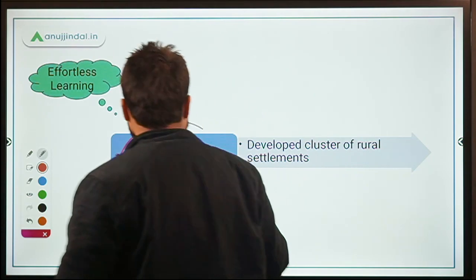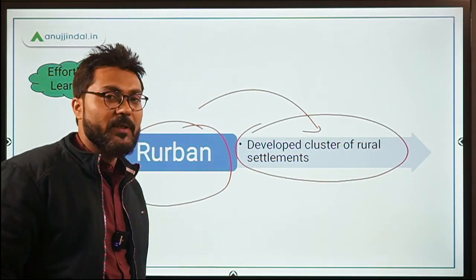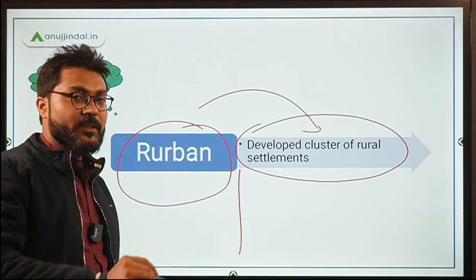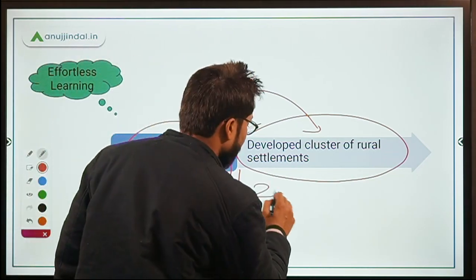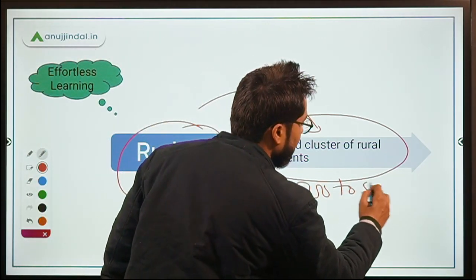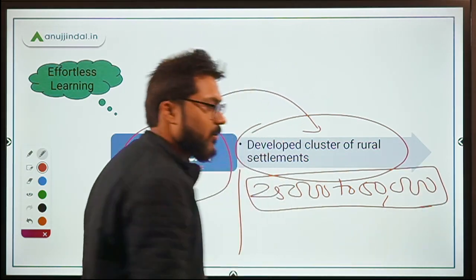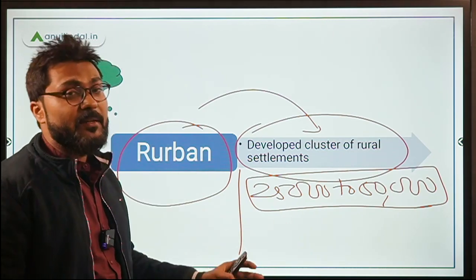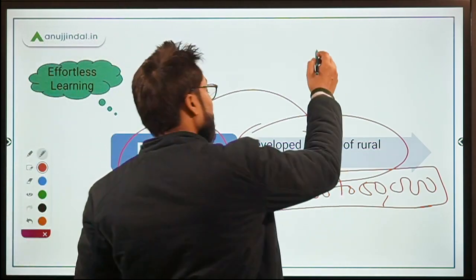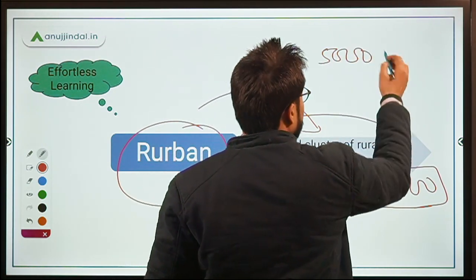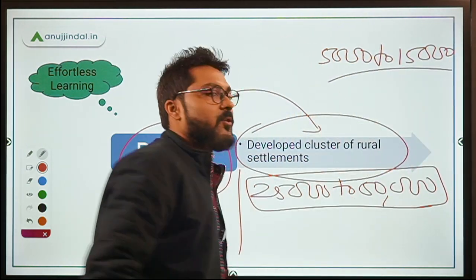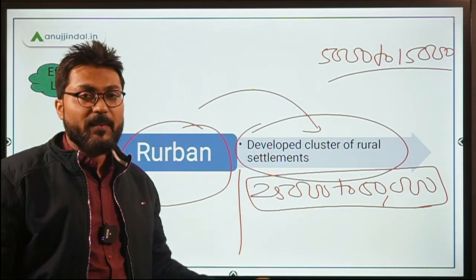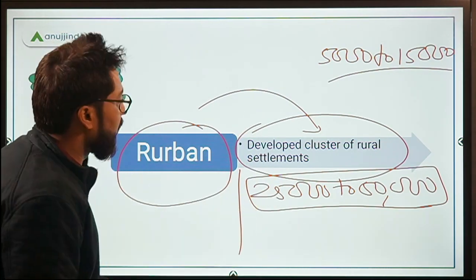Let's revise: a rurban cluster is a developed cluster of rural settlements. In plain and coastal areas, a rurban cluster has a population of 25,000 to 50,000. In desert, hilly, or tribal areas, the population criteria is 5,000 to 15,000. Rurban clusters are groups of villages developed under the Shyama Prasad Mukherjee Rurban Mission, launched in 2016.